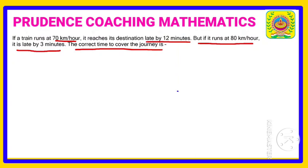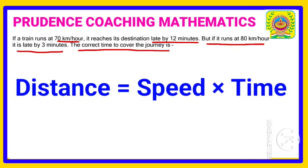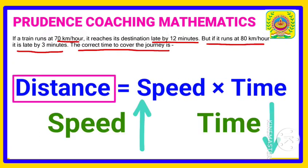We need to find the time when the train is neither late nor early. As you can see, the distance traveled at 70 km/h is the same as at 80 km/h. Since distance equals speed times time and distance is constant, if speed increases, time decreases — speed and time are inversely proportional.